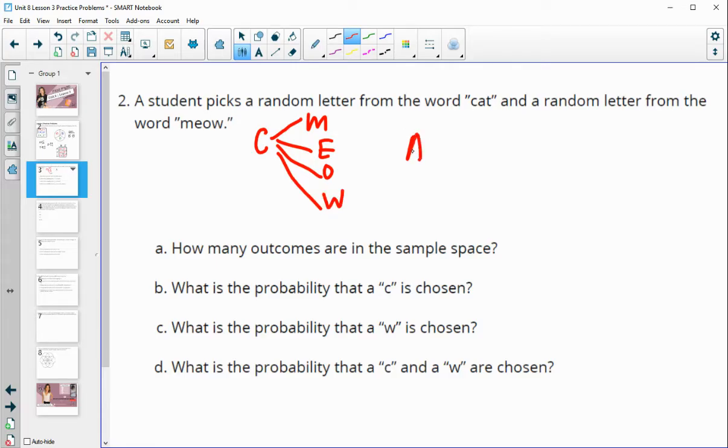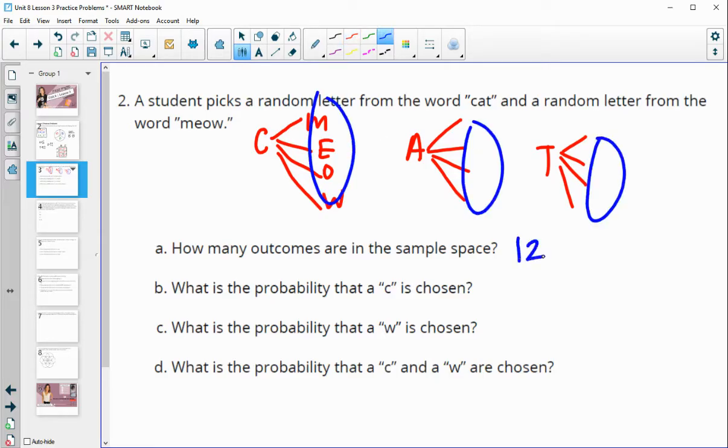And then when I do A, if I chose A, I could have those same four. And so maybe you start to see a pattern here that with C you'll get four options, with A you'll get four options, and with T you'll get four options, which gives us 4, 8, 12 total outcomes in our sample space.